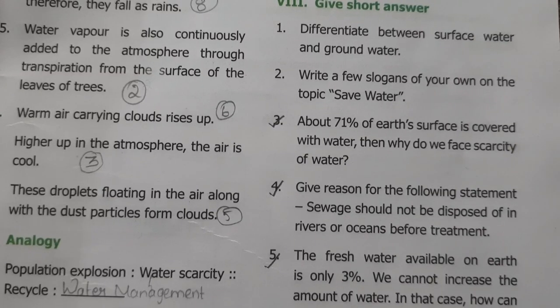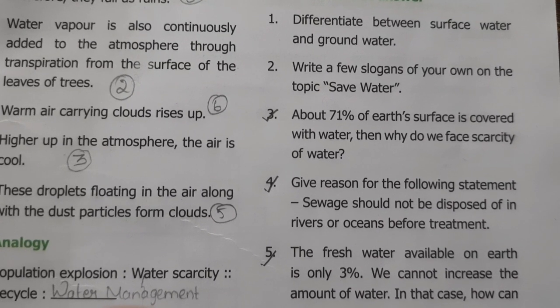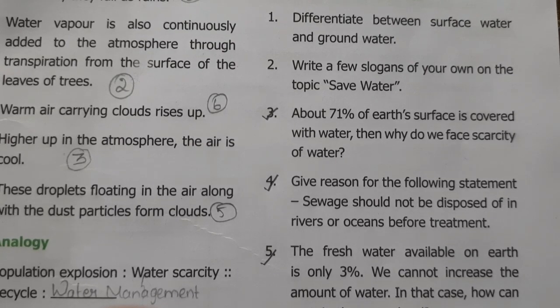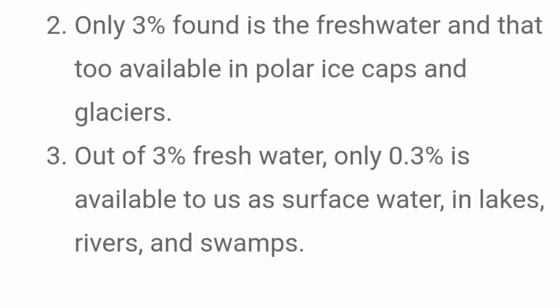About 71 percentage of earth's surface is covered with water — then why do we face scarcity of water? Because 97 percentage of total water is found in seas and oceans, which is salty and unfit for human consumption. Only 3 percentage is fresh water, and two-thirds of that is available in polar ice caps and glaciers. Out of 3 percentage fresh water, only 0.3 percentage is available as surface water in lakes, rivers, and swamps.